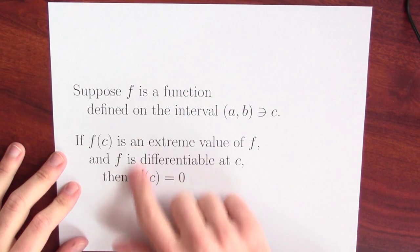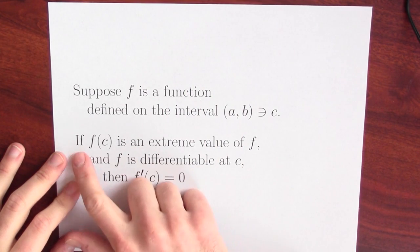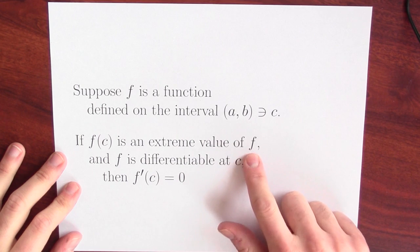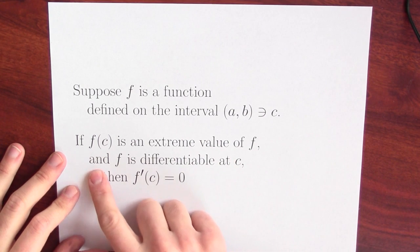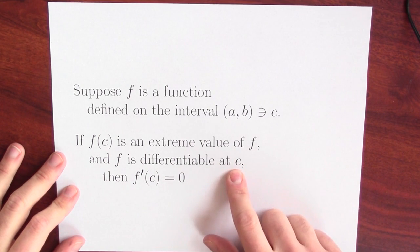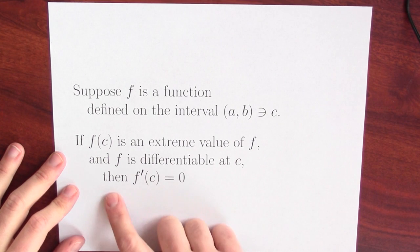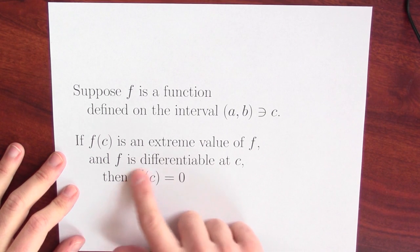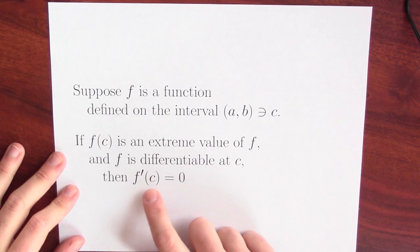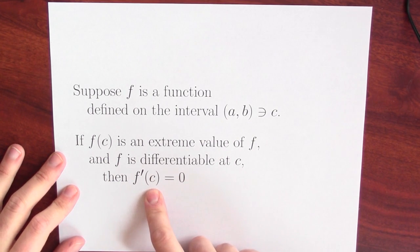Here's Fermat's theorem. If f of c is an extreme value of the function f and the function is differentiable at the point c, then the derivative vanishes at the point c.